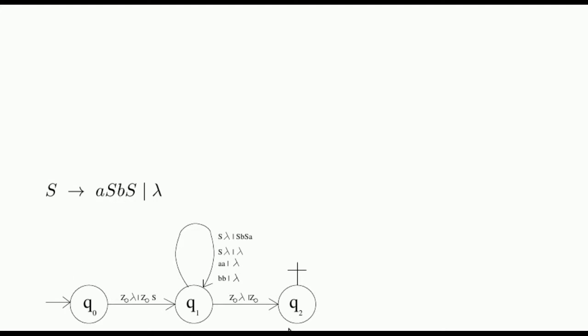This is the pushdown automaton automatically obtained from the grammar. Regardless of the grammar, it has three states. These two transitions will also be needed, regardless of the grammar. Note that we have assumed that S is the grammar's starting symbol.